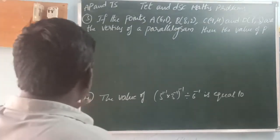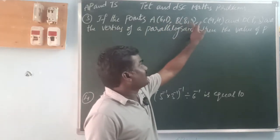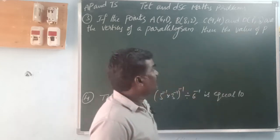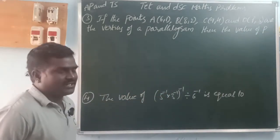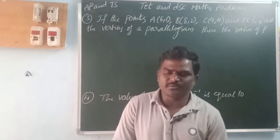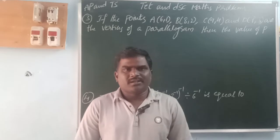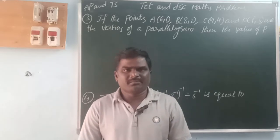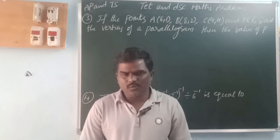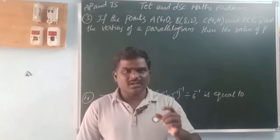Next problem: the points A(6,1), B(8,2), C(9,4), and D(p,3) are the vertices of a parallelogram. Find the value of p. In a parallelogram, the opposite sides are equal and parallel, and the diagonals bisect each other, meaning their midpoints are equal.